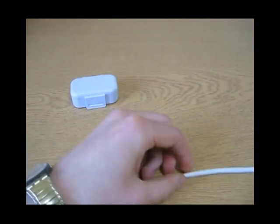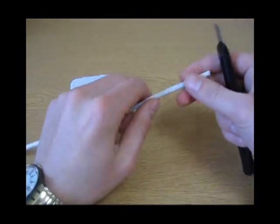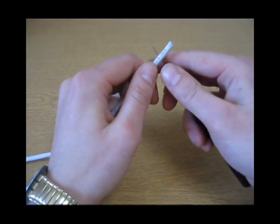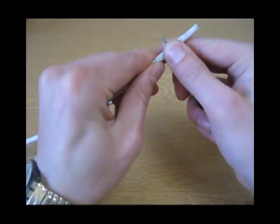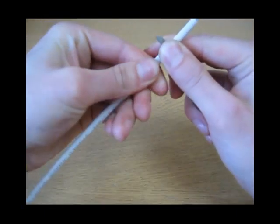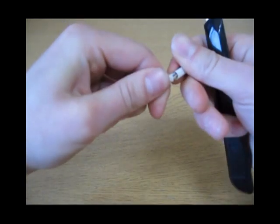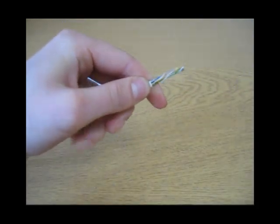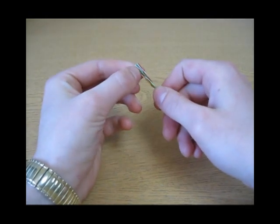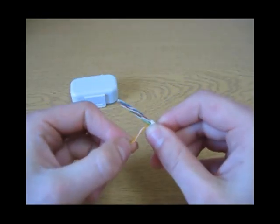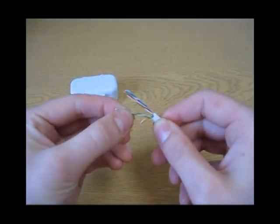Firstly you will take your length of Cat5e or Cat6 cable and you will trim about 45mm off the outer sheath. So you pull that off and then what we want to do is arrange the internal wires of the Cat5e cable in the correct order.